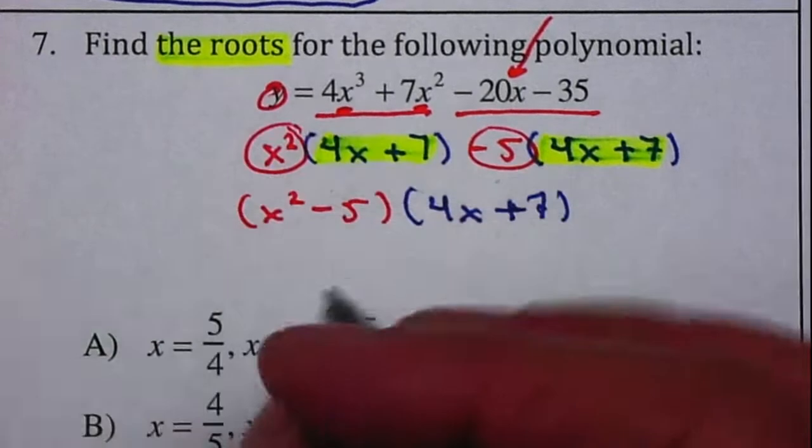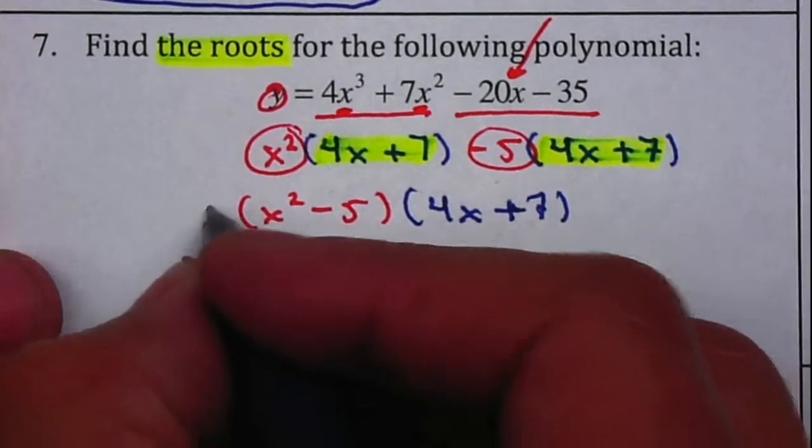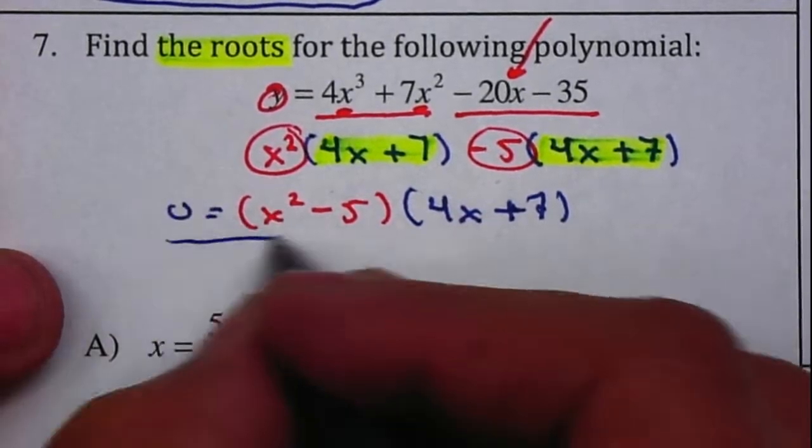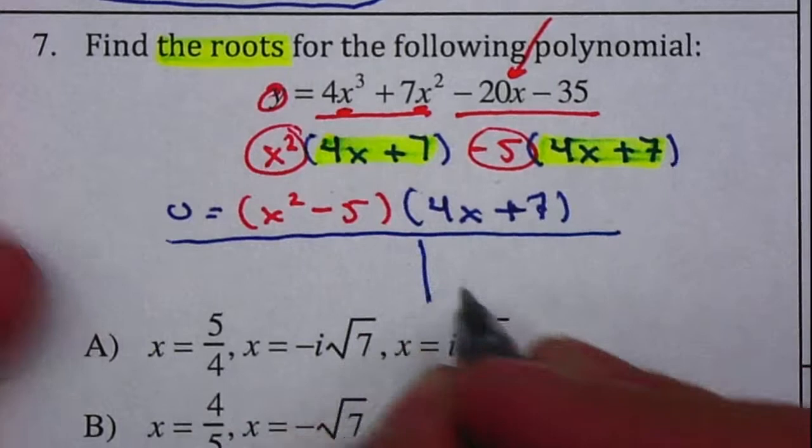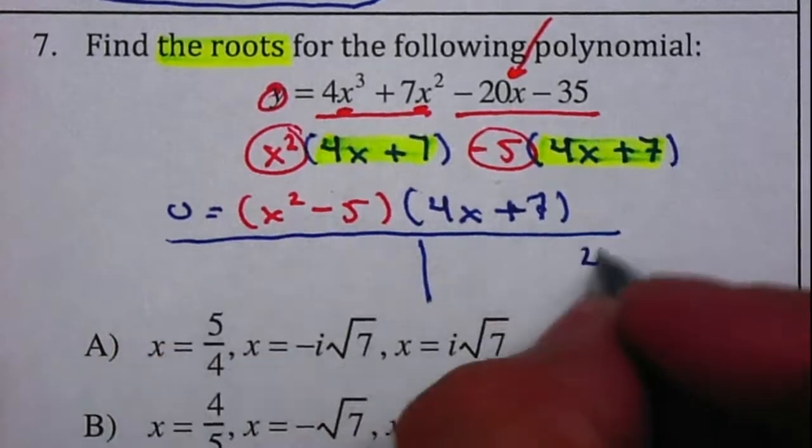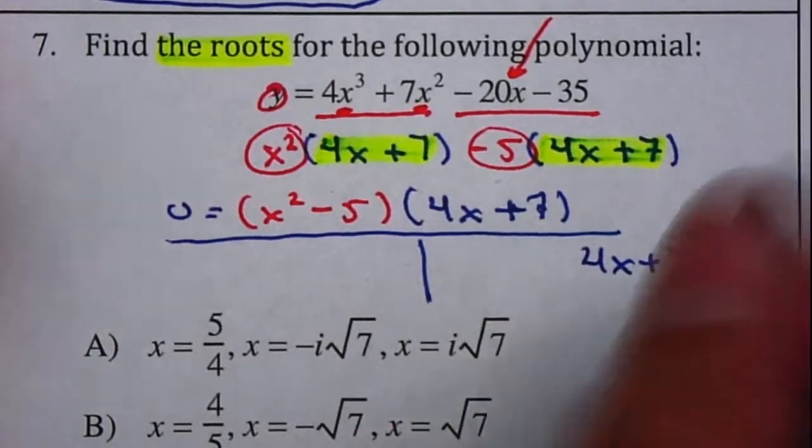Now, I need to find the roots. So, therefore, I need to use my zero product property, because it's equal to 0 and solve each one. I'll set my 4x plus 7 equal to 0 over here.